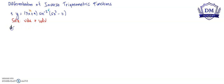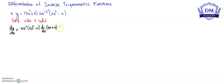So our working solution for this one uses v·du + u·dv — this is the product rule. We let u equal to (3x + 9) and we let v be the sine inverse of (5x² - 11).